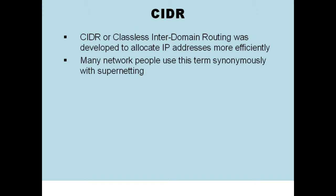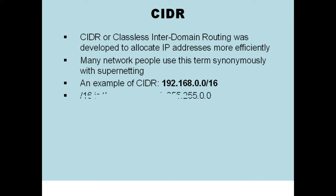but really, CIDR is a combination of supernetting and subnetting and just regular old netting. An example of CIDR would be 192.168.0.0/16. The slash 16 tells us we have a subnet mask of 255.255.0.0.